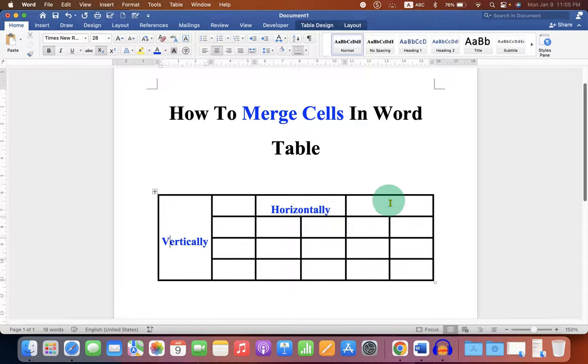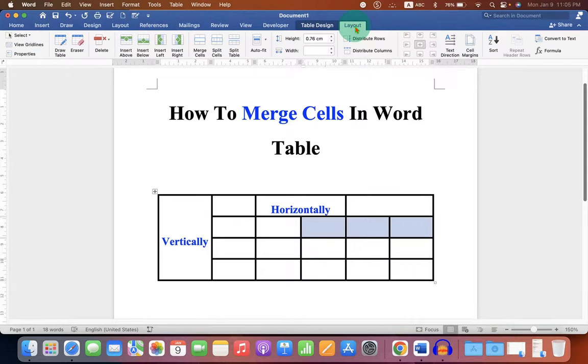To merge cells horizontally, select the horizontal cells. After selecting the table cells, you will see here the option Layout. Remember that you don't have to click on this Layout option, you have to click on this Layout option and here you will see the option of Merge Cells.